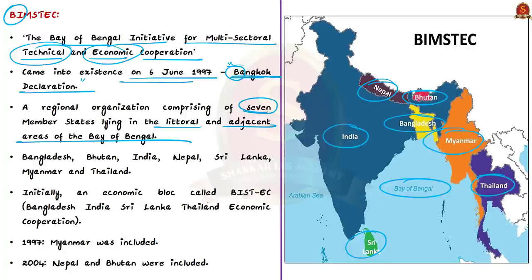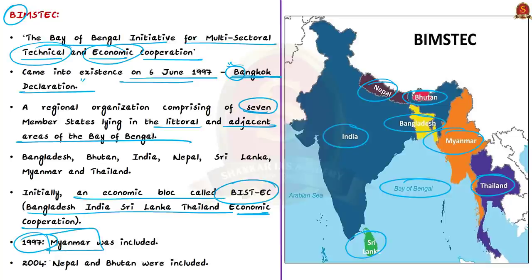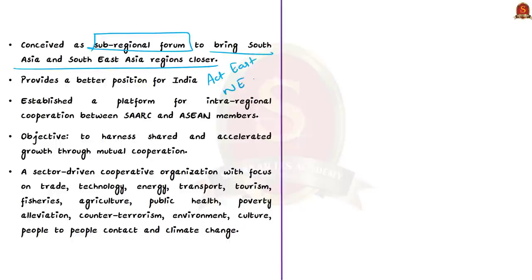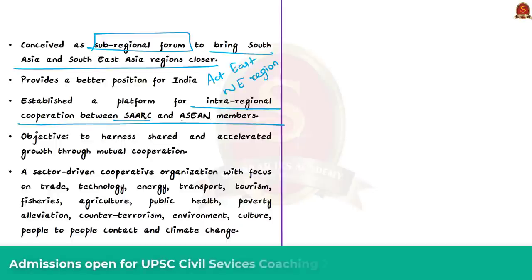Initially, an economic block was formed with four member states with the acronym BISTIC — Bangladesh, India, Sri Lanka, and Thailand Economic Cooperation. Then in December 1997, Myanmar was included, and in 2004 Nepal and Bhutan were included, and the acronym BIMSTEC was born. BIMSTEC was conceived as a sub-regional forum bringing South Asia and Southeast Asia closer.